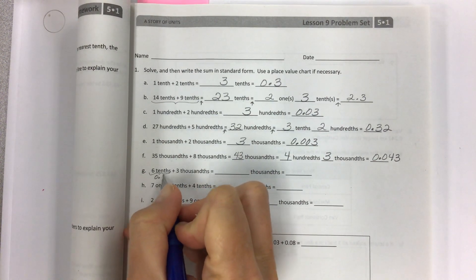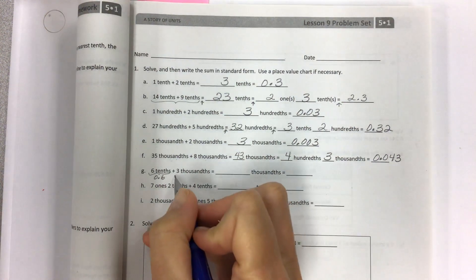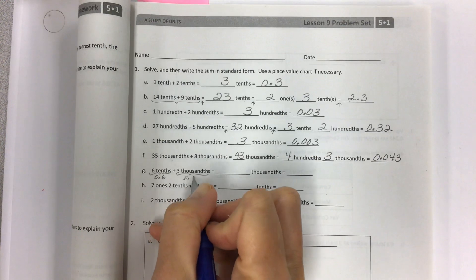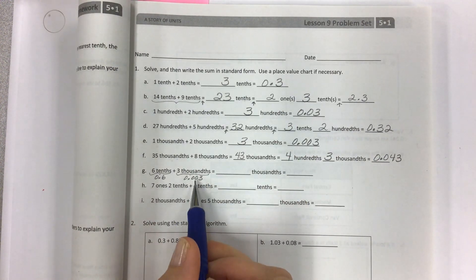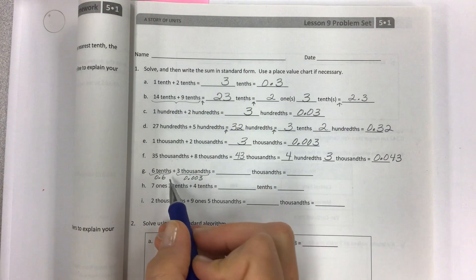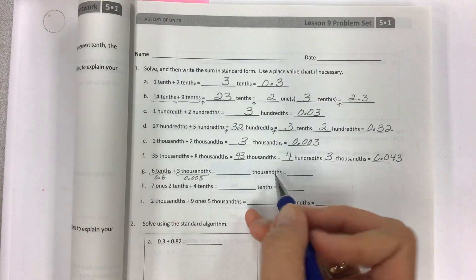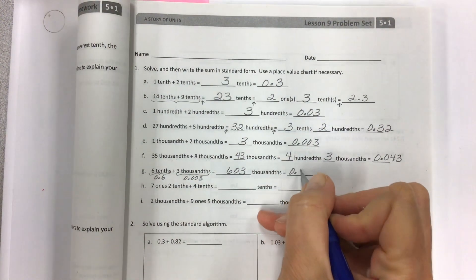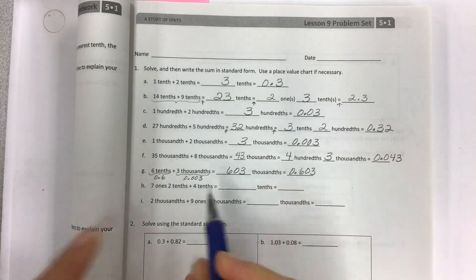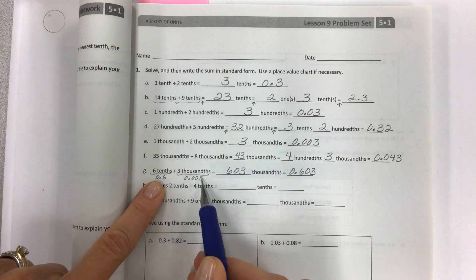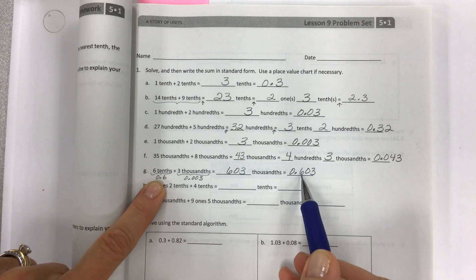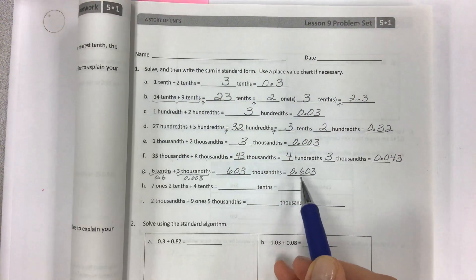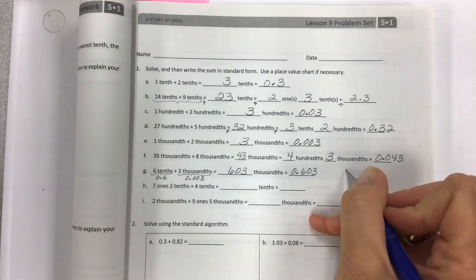This one, if you would like to write it in standard form, it can always help you: 6 tenths plus 3 thousandths. Because we're combining unlike terms here, if you do this it's going to help you see what the total number is of your thousandths. It's going to be 603 thousandths. If you're combining a 6 in the tenths place with a 3 in the thousandths place, then you would end up with 603 thousandths.